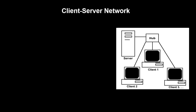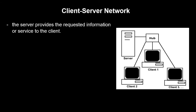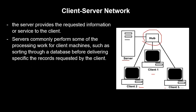In a Client-Server Network, the server provides the requested information or service to the client — we have the server and the client PCs. Unlike Peer-to-Peer where there are no devices in between, in a Client-Server Network we have another device which is the Hub. Servers commonly perform some of the processing work for client machines, such as sorting through a database before delivering specific records requested by the client.